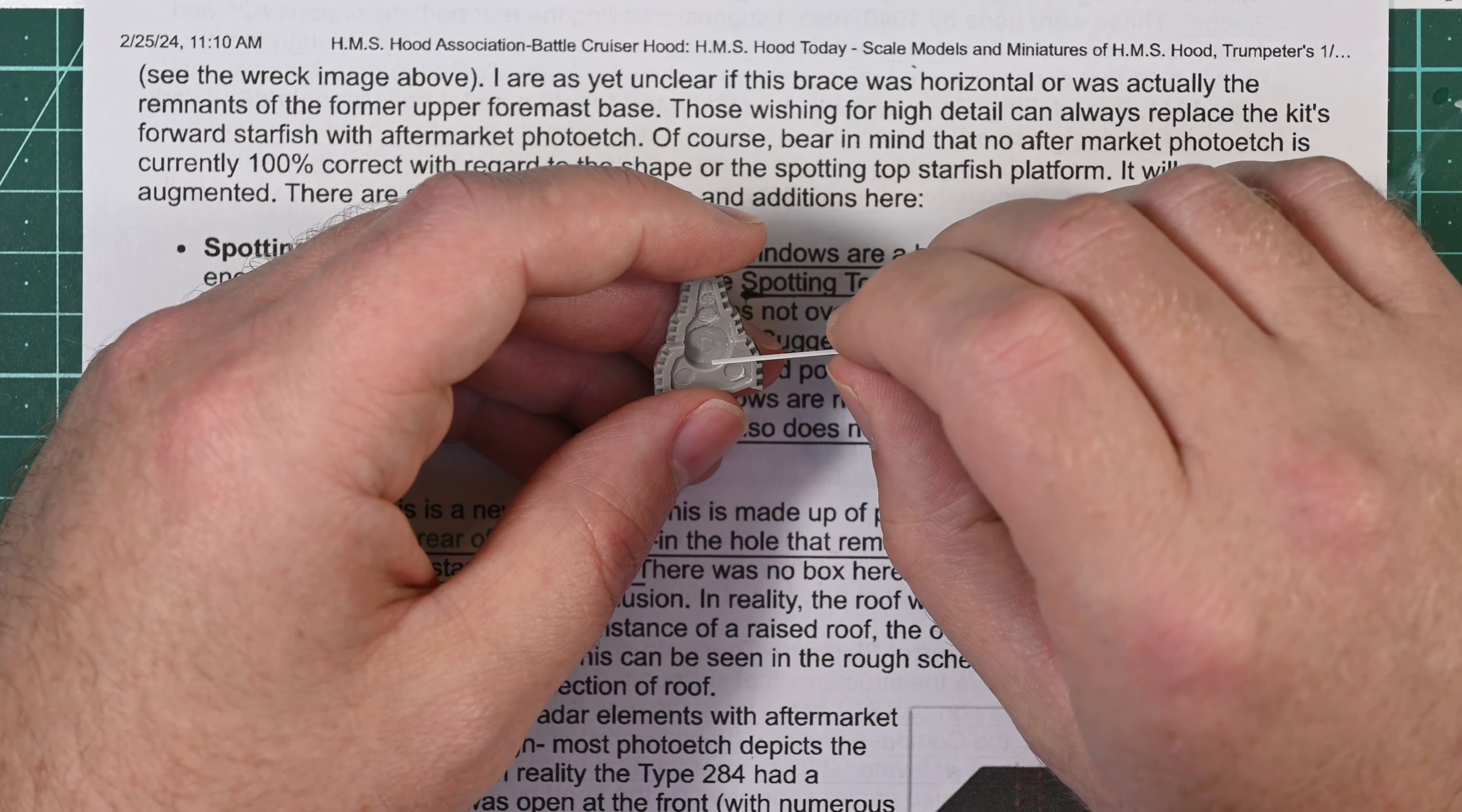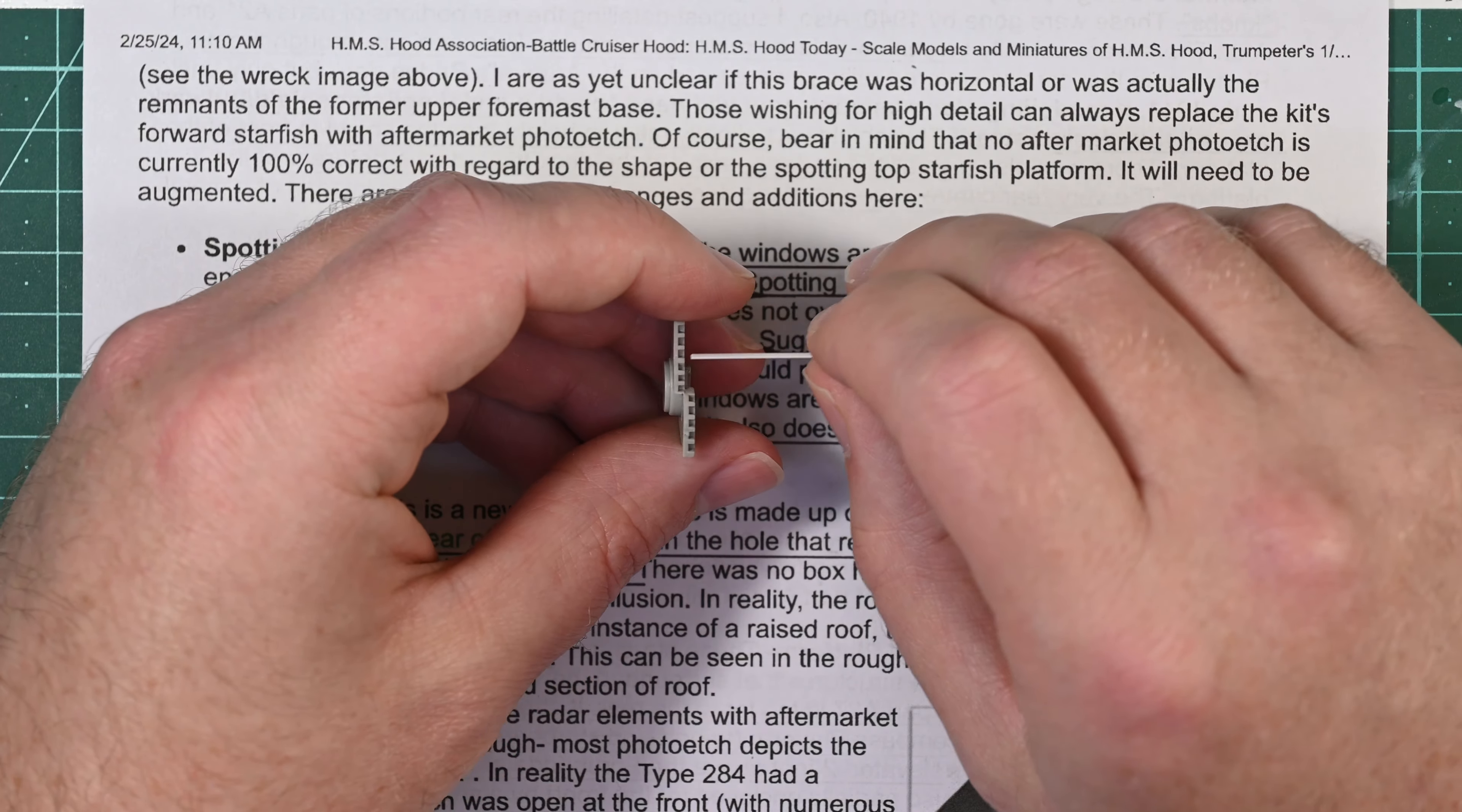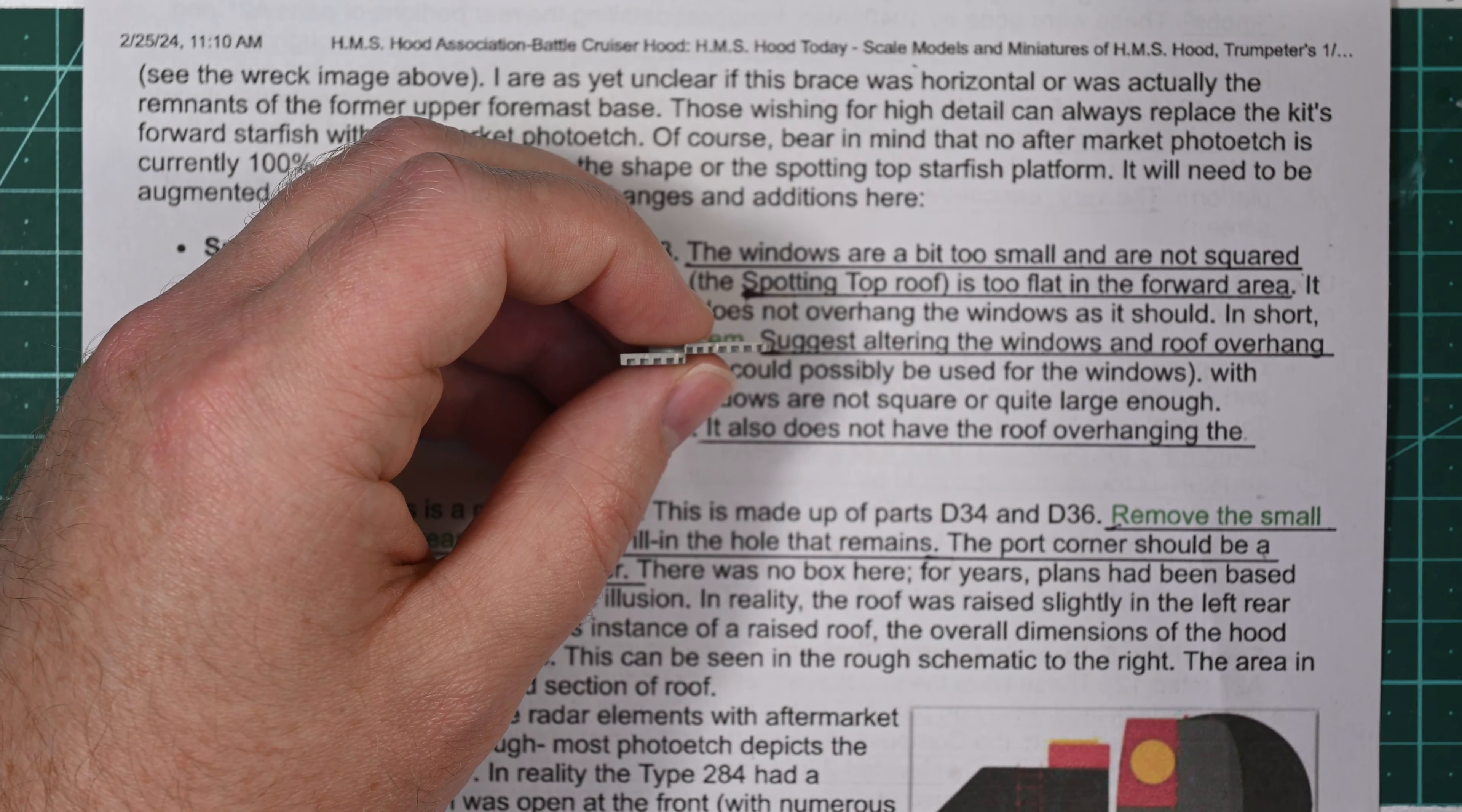The reason why I think I might be making a mistake is that it's going to be difficult to evenly space all this plastic stock, and even if I do get it spaced correctly, it's going to be very difficult to keep all these pieces standing vertically. That could mean that when this part is viewed, the windows look all out of alignment and that could be quite unattractive.